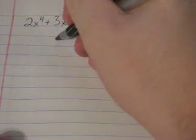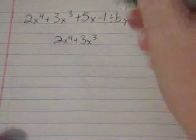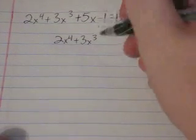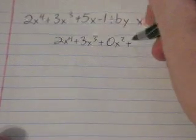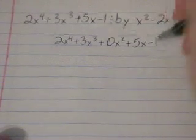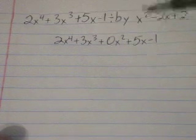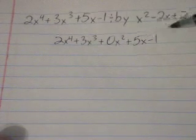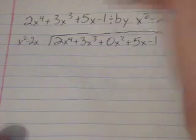So this will have to become 2x to the 4th plus 3x cubed. Since we don't have a 2 as an exponent, we have to plug in 0x squared plus 5x minus 1. Now, to account for all my exponents going from our highest all the way down to 0, 4, 3, 2, 1, 0. And that's going to be divided by x squared minus 2x plus 2.